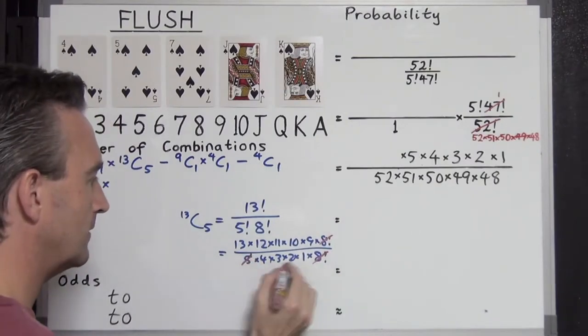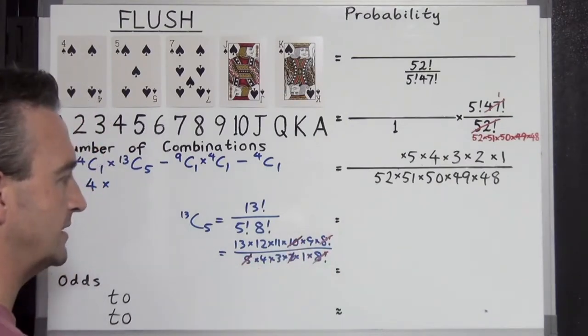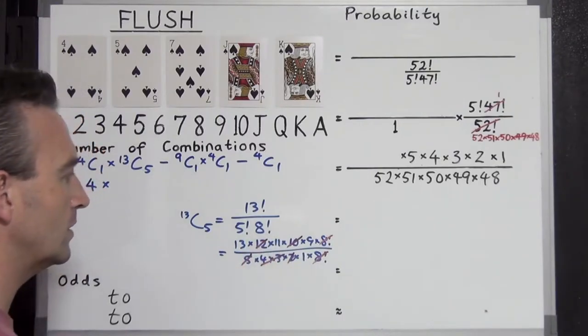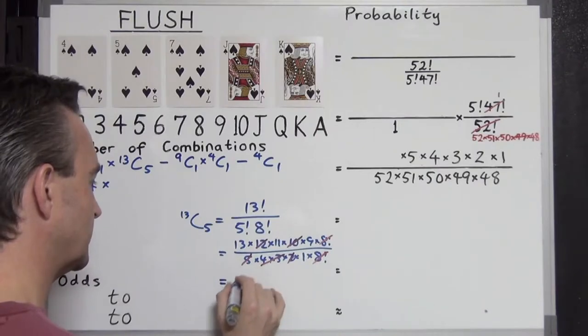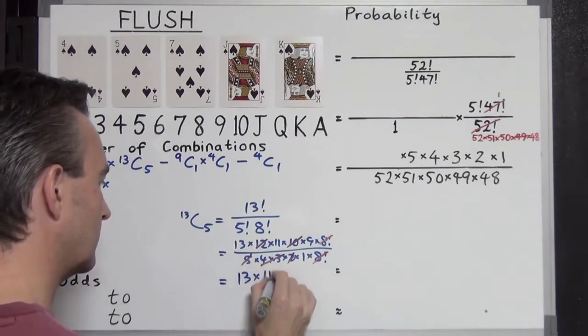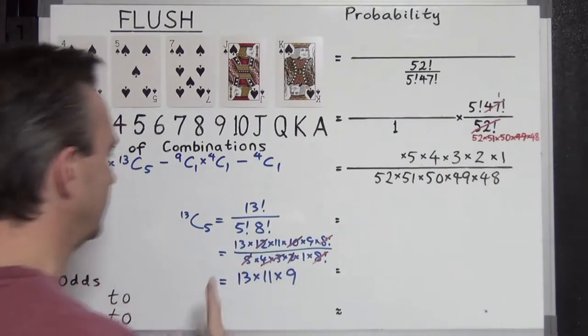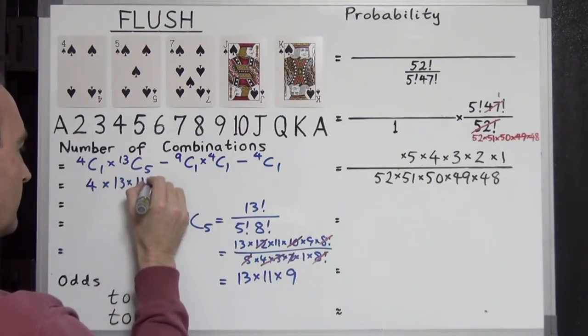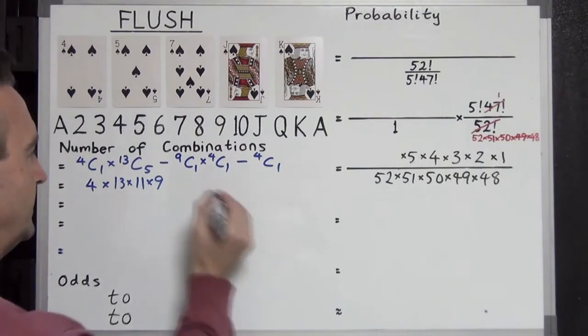We also have 5 times 2 is 10, canceling with the 10 on the top. We also have 3 times 4 canceling with the 12. That simply leaves us with 13 times 11 times 9. I'm just going to put it up here straight away. Leave it like that. Doing the rest here.